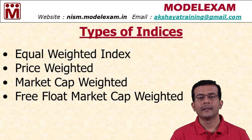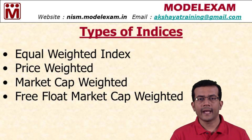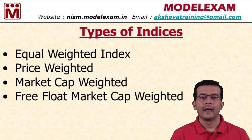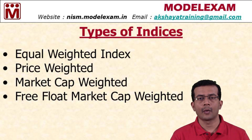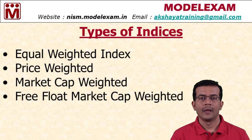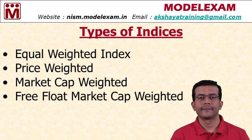Based on these weightages, the index value will be calculated. The second method is the price weighted index. As the name indicates, the weightage is given based on share prices. So if a share is priced at 1000 rupees and another at 300 rupees, the 1000-rupee share will get more weightage. Higher the share price, the more the weightage; lower the share price, the lesser the weightage.